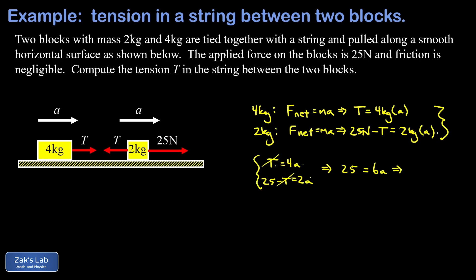When I solve for a, I get 25 over 6, which is the same 4.17 meters per second squared that we originally found.